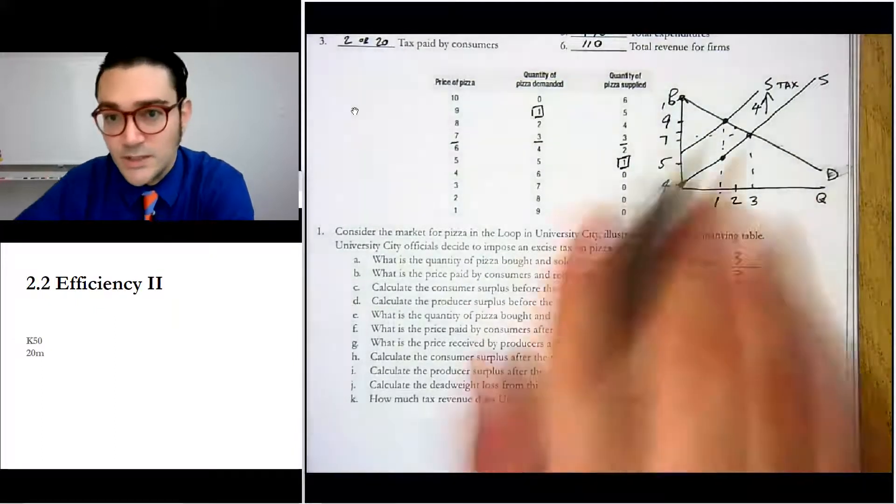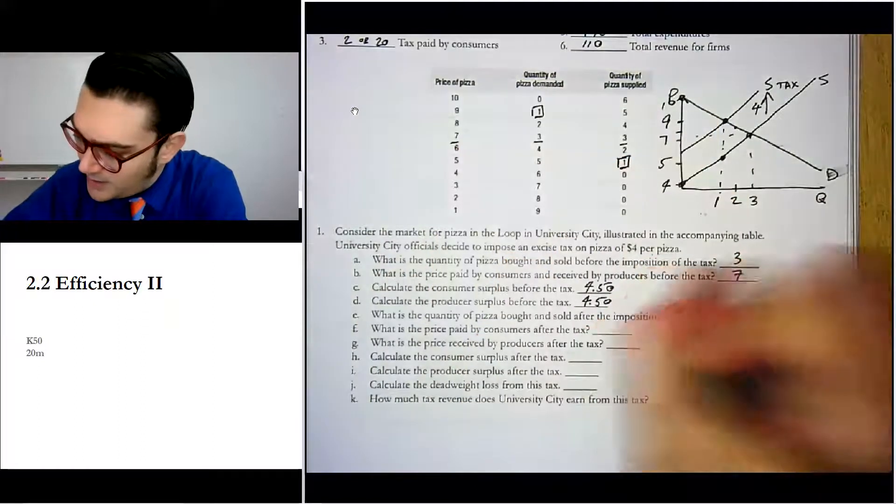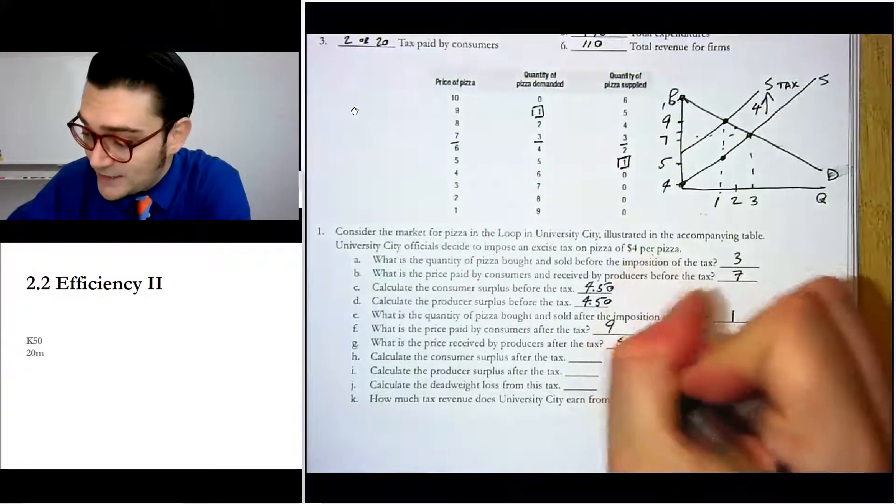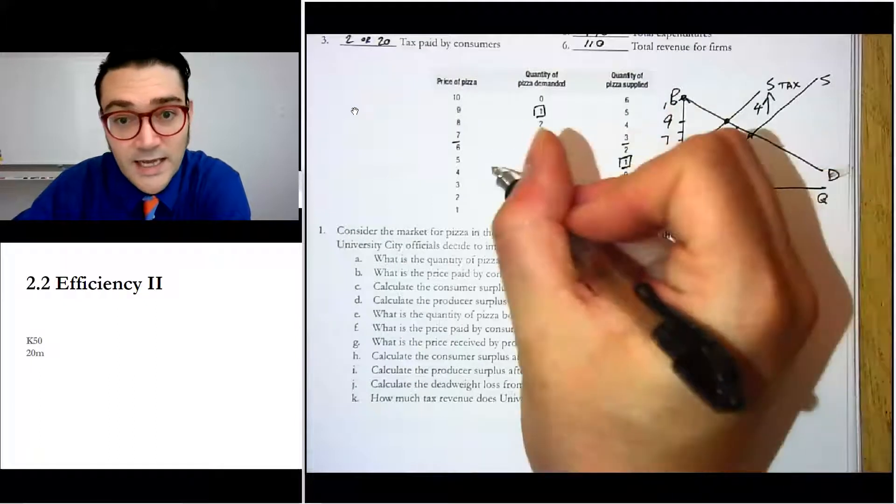We know that there's one pizza sold. What's the price paid? Well, we just look at the table and we see they'd pay nine dollars. How much do the producers get to keep? Well, nine dollars minus four dollars is five dollars. And in fact, we know that it's five dollars because it tells you right here, quantity supplied is one at five dollars.